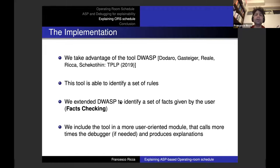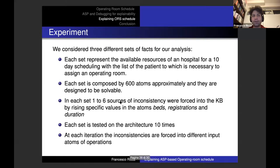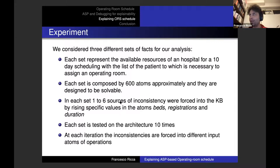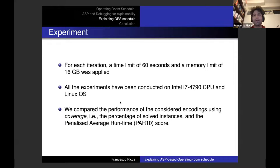We integrated the DWASP debugging tool and modified it to handle facts instead of rules, then embedded it in a larger architecture. To give a sense of performance, we considered different sets of facts while increasing the number of causes of problems in each set, repeating each experiment multiple times. The experimental settings include a timeout, memory limits, and so on.